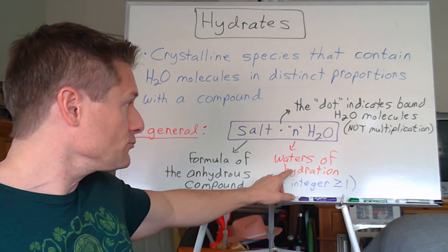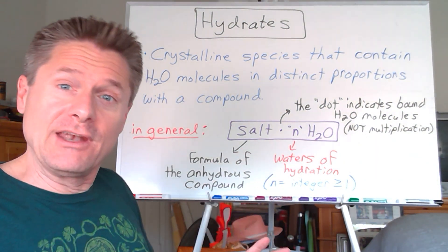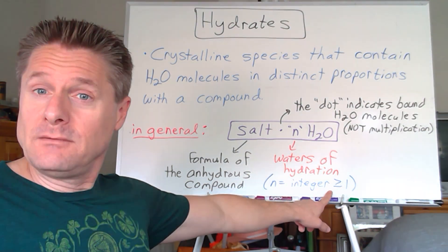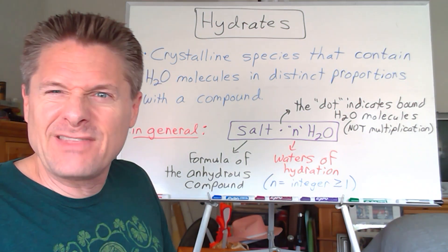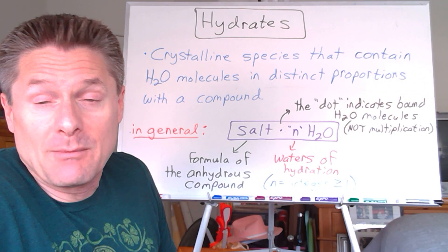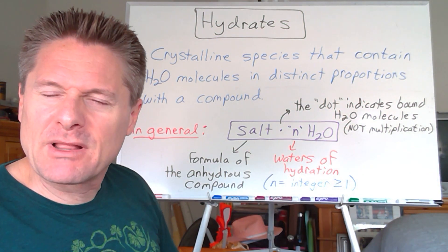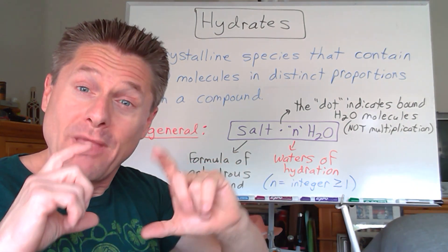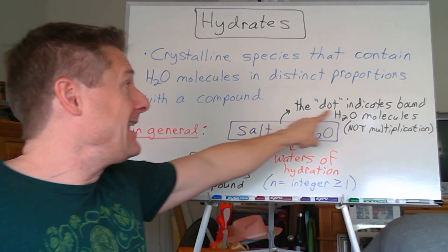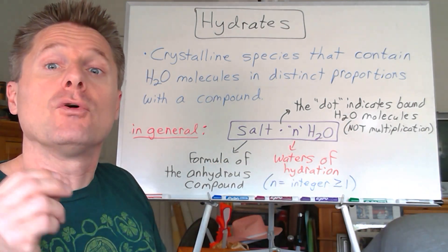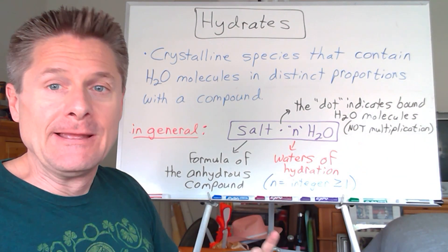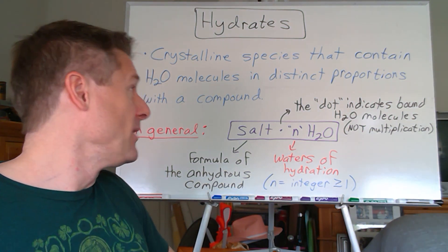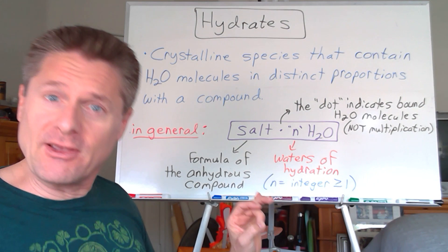Waters of hydration are integers — we'll only deal with integers in this class. Zero would just be the anhydrous salt, so n is greater than or equal to one. The highest I've seen in class is 12, though usually you're dealing with one through ten. That dot is not a multiplication sign. I prefer parentheses for multiplication — the dot indicates the water molecules are electrostatically bound to the compound.